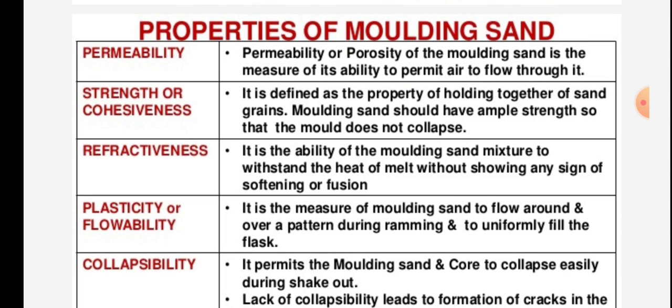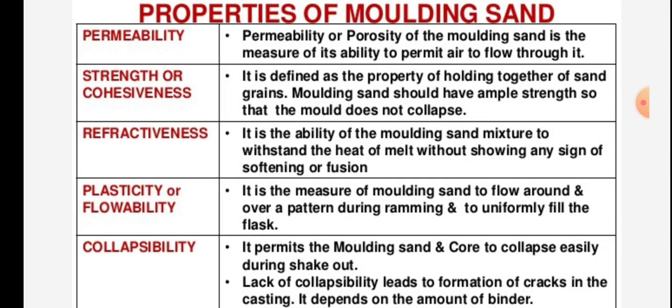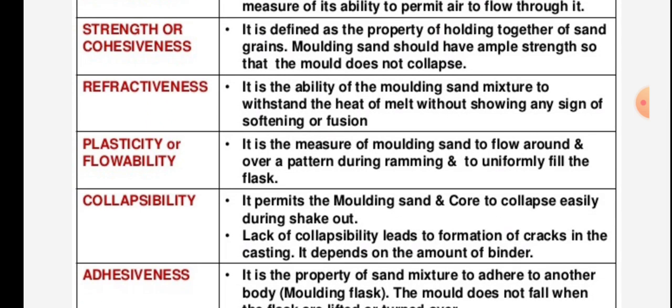Properties of molding sand. First property is permeability. Permeability or porosity of the molding sand is the measure of its ability to permit air to flow through it. Strength or cohesiveness is defined as the property of holding together of sand grains. Molding sand must have ample strength so that the mold does not collapse.